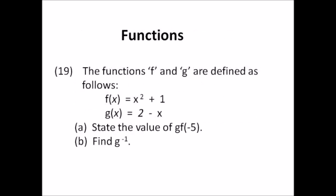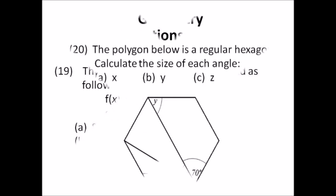Number nineteen: functions. f(x) equals x² plus 1, and g(x) equals 2 minus x. a) State the value of gf(negative 5) — two steps to get the final answer. b) Find g inverse — also two steps. Algebra dominates a lot of the exam questions, so you need to be well-versed in it. Practice is all it takes.